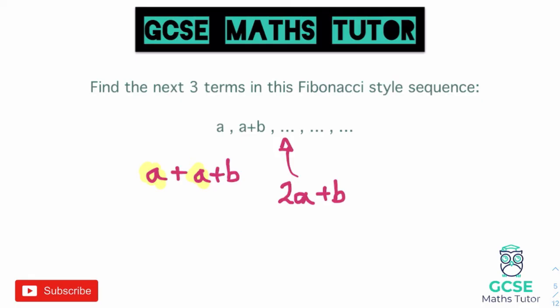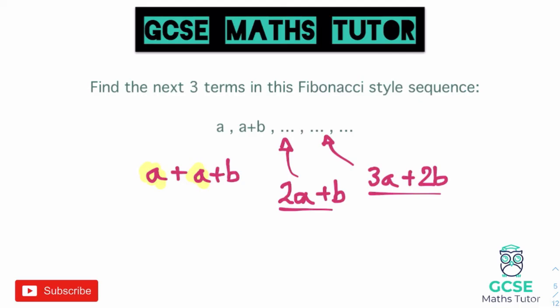Our third term is 2a plus b. Now we look at the previous two terms: a plus b and 2a plus b. Adding those together we have three a's and b plus b which is 2b, giving us 3a plus 2b for our fourth term. Then looking at 2a plus b and 3a plus 2b: 2a plus 3a is 5a, and b plus 2b is 3b. So our fifth term is 5a plus 3b. We're just collecting like terms and treating this like every other Fibonacci sequence.